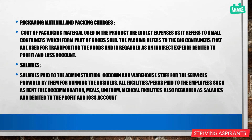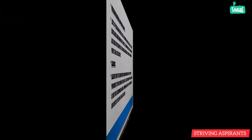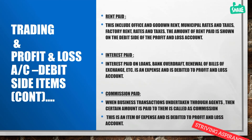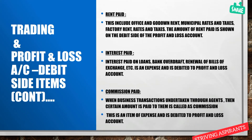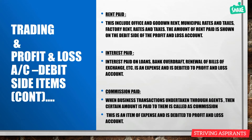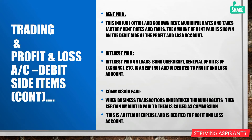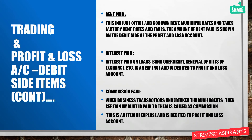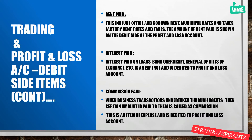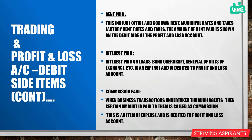Next is rent paid, which includes office and godown rent, municipal rates and taxes, and factory rent, rates, and taxes. The rent paid amount is shown on the debit side of the profit and loss account. Interest paid — on loans, bank overdrafts, renewal of bills of exchange, etc. — is also an expense debited to the profit and loss account.